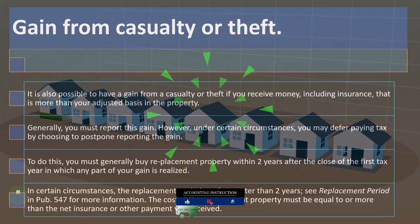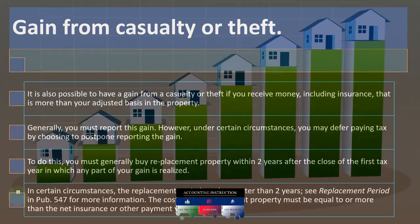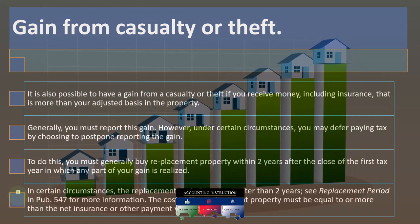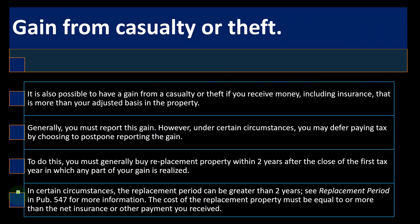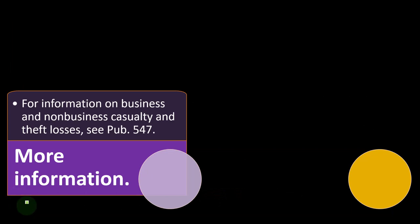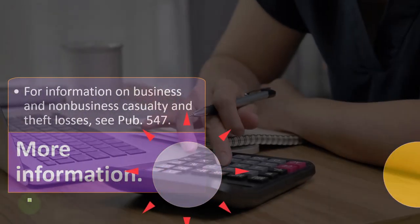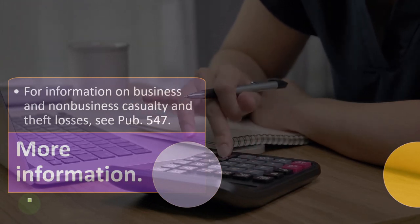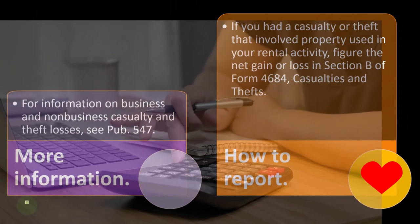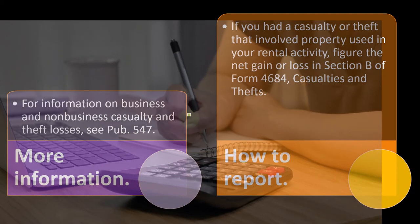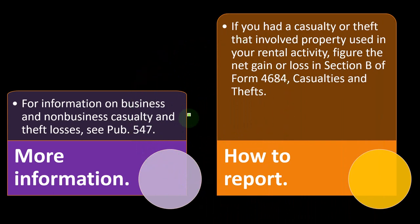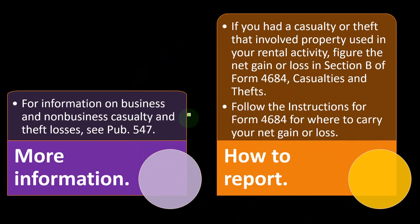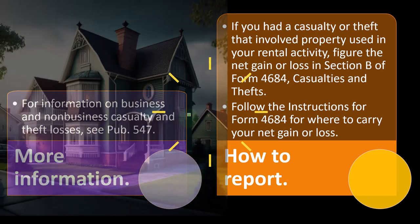For more information on business and non-business casualty and theft losses, see Publication 547. To report: if you had a casualty or theft involving property used in your rental activity, figure the net gain or loss in Section B of Form 4684, Casualty and Thefts. Follow the instructions for Form 4684 for where to carry your net gain or loss.